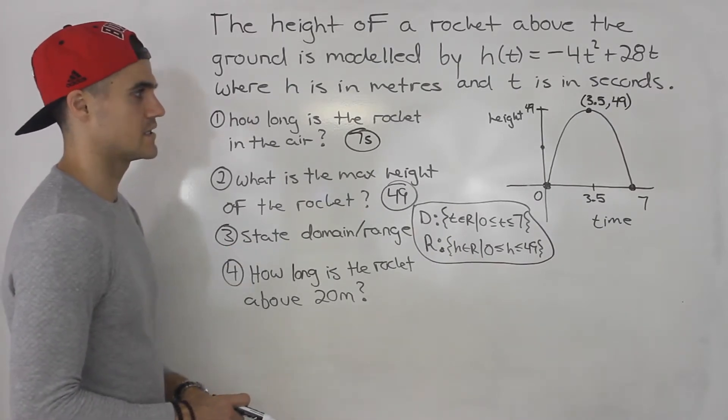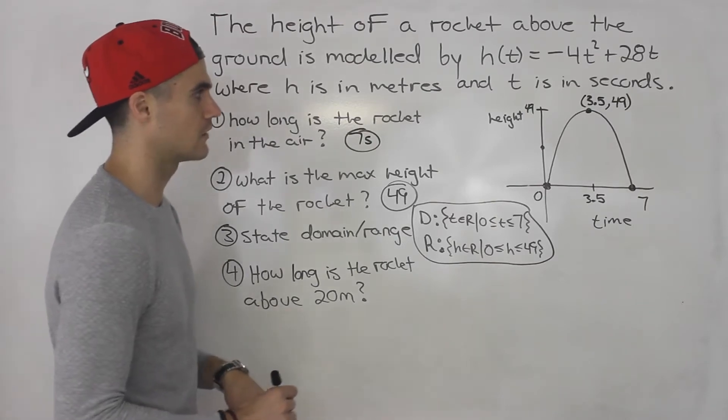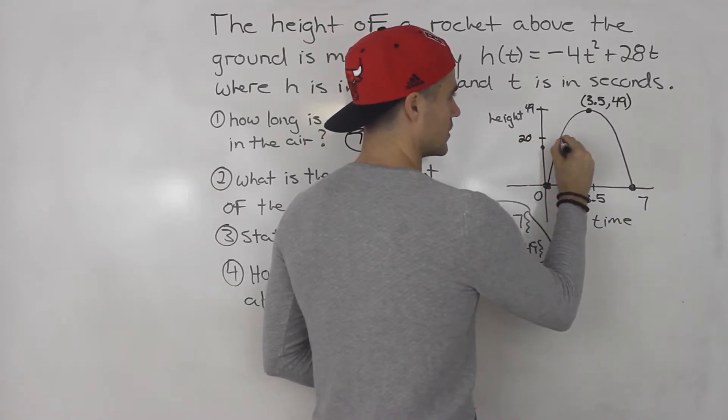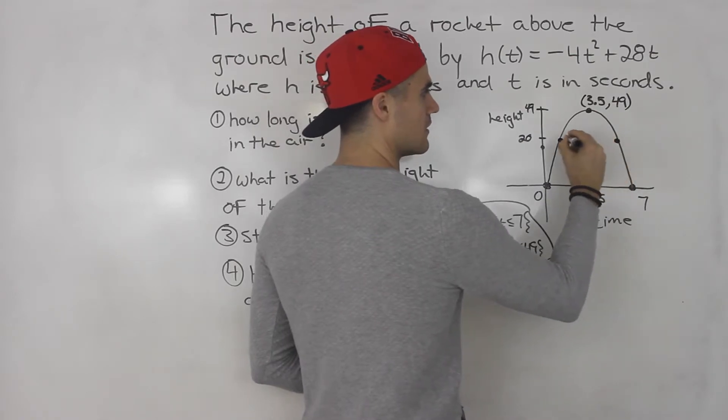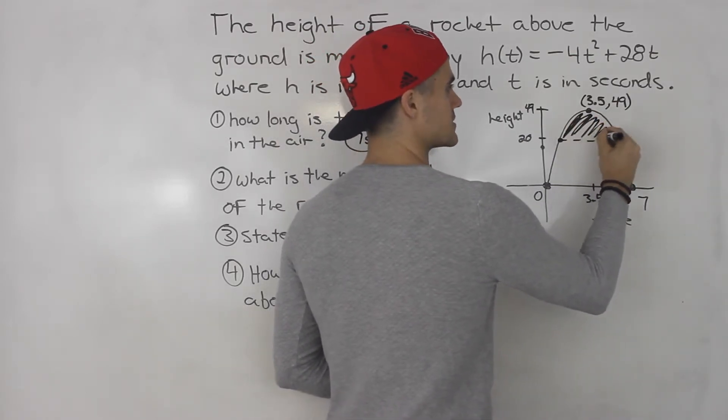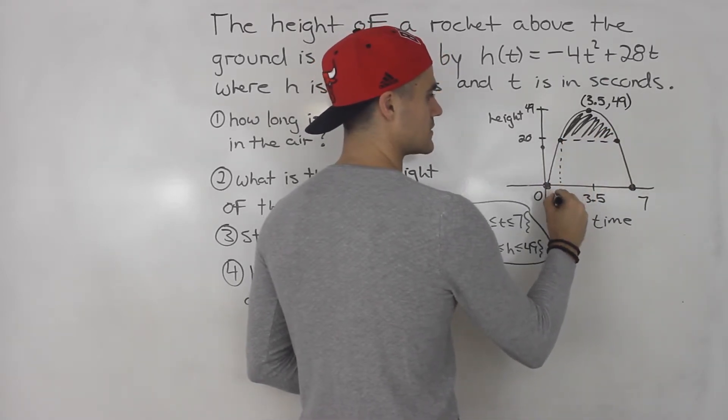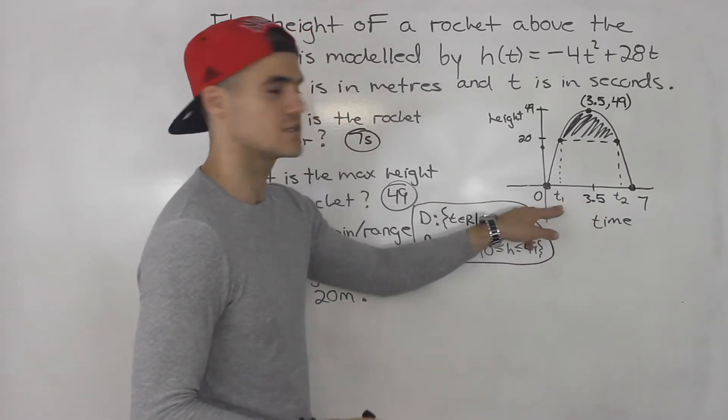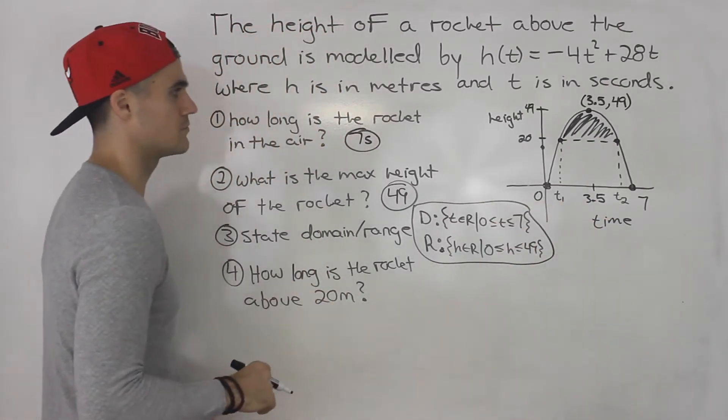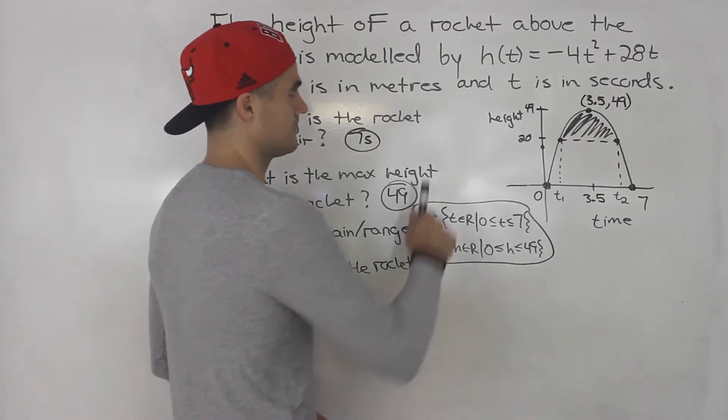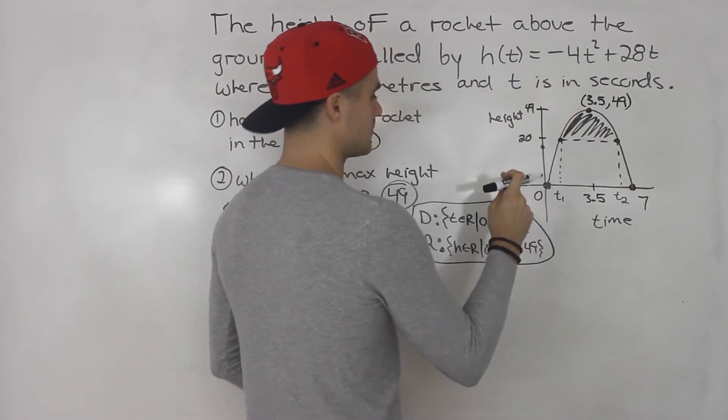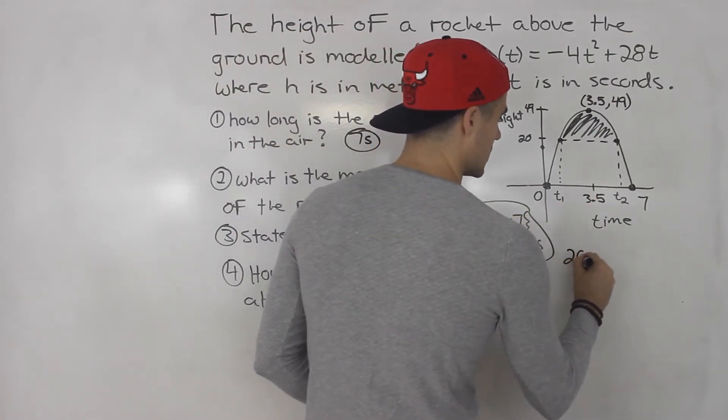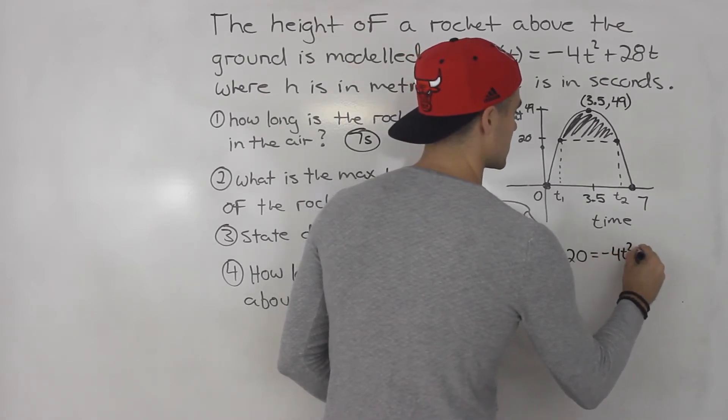And then number four, how long is the rocket above 20 meters? So this question is going to require a little bit more algebra. What they're asking is, let's say 20 meters is like here. Notice it hits 20 meters there, and it hits 20 meters there. They're asking, how long is the rocket above 20 meters? So basically, we're going to have to find t₁ when it hits 20, and then also t₂ when it hits 20. And then we could take the difference between t₂ and t₁, and that's how long the rocket would be above 20 meters. So basically, we have h = -4t² + 28t. We have to plug in 20 for h and then solve for t in order to get these two values here. So we'd have 20 = -4t² + 28t.